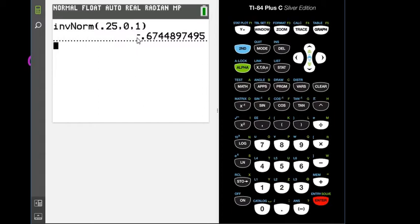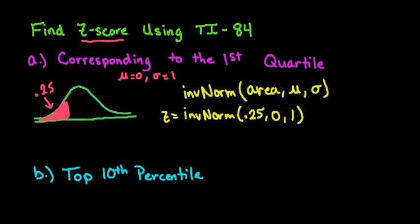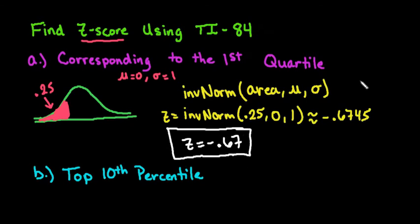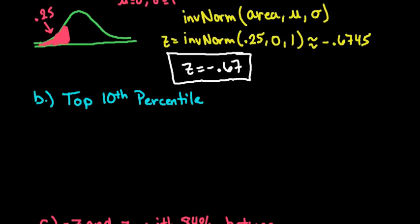When you hit enter, you get negative 0.6744, which is approximately negative 0.6745. Most of the time with z-scores we only go to two decimal places, so we could put that this is negative 0.67 — because if you're using a table, that's how many places you'd be able to find it to. It's close to negative 0.67.